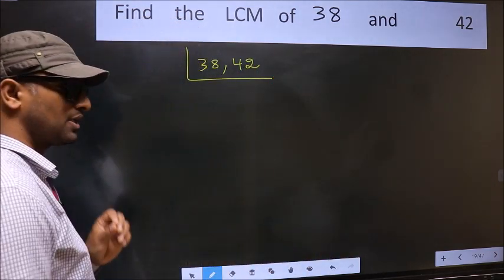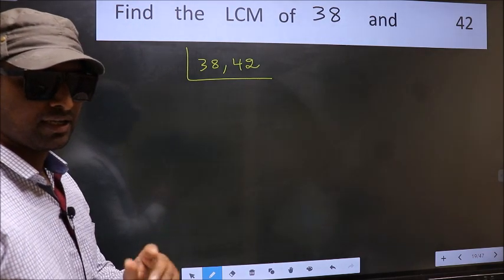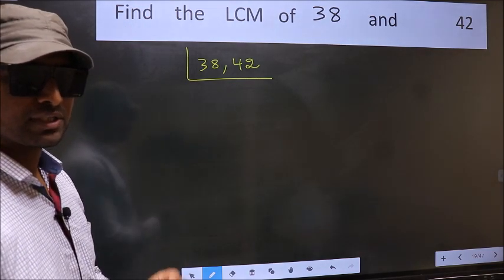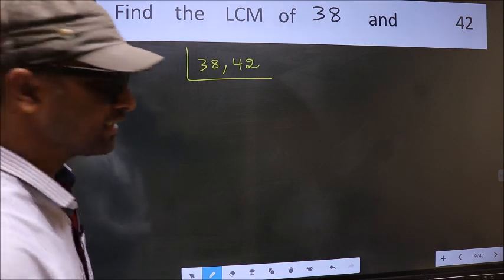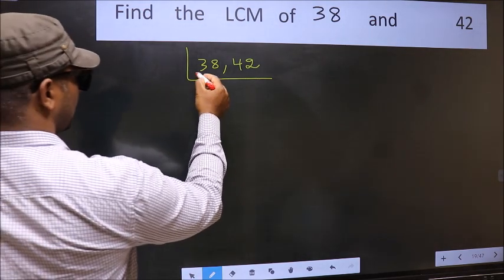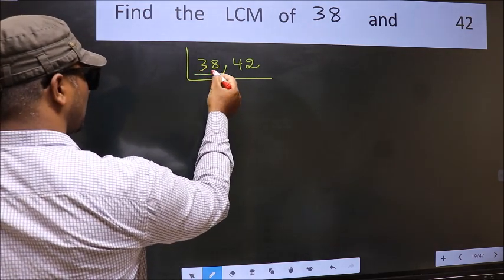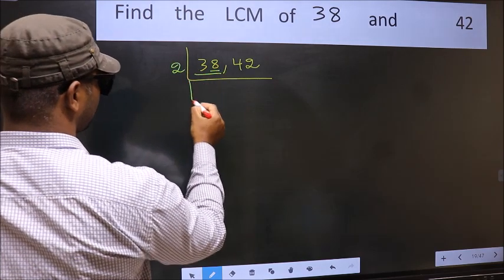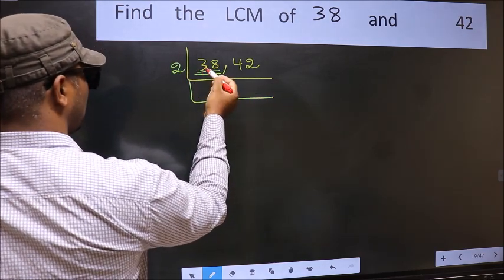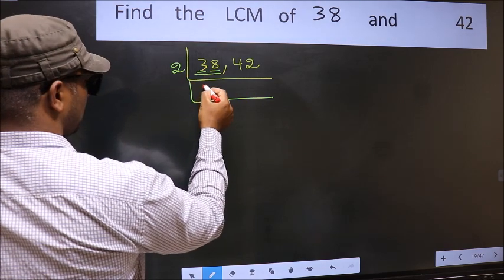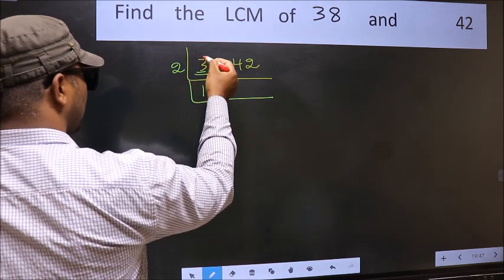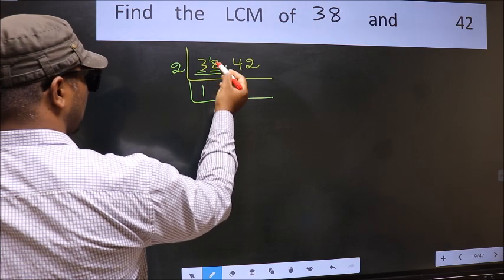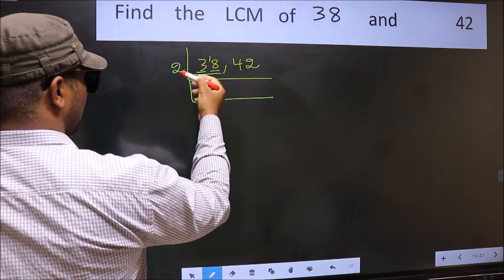This is step one. Now focus on the first number, which is 38. For this number, the last digit 8 is even, so take 2. First number 3, a number close to 3 in the 2 table is 2×1=2. 3-2=1, carried forward. 18, when do we get 18 in the 2 table?